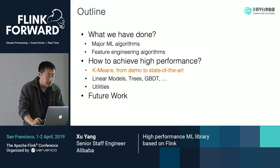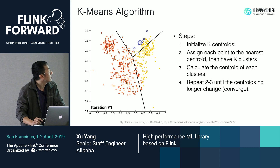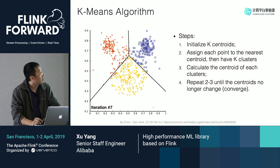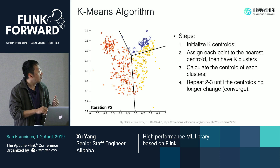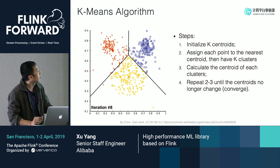In the next section, we will start with the k-means algorithm. First, a short introduction: initialize k centroids, then assign each point to the nearest centroid to get k clusters. For each cluster, calculate the new centroid. Then repeat steps two and three until convergence. That's the k-means algorithm.